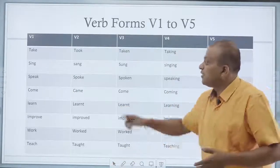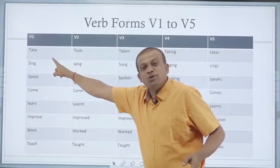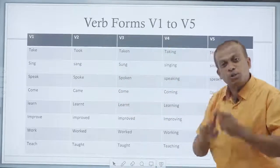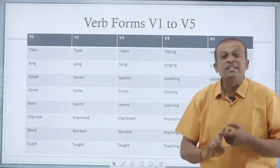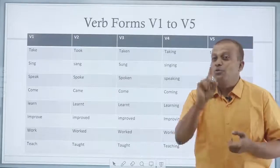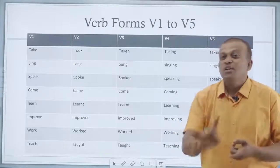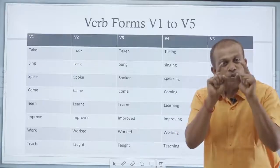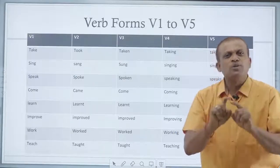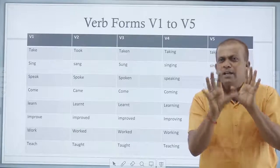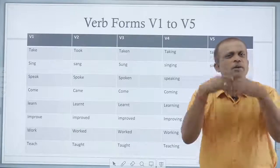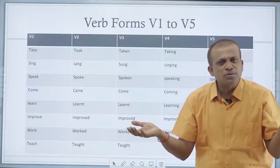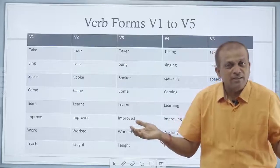Where I have to use the word 'take', where I have to use the word 'took', where I have to use the word 'taken', where I have to use the word 'taking', where I have to use the word 'takes'. If you understand how to use these 5 verbs in English, your English is undoubtedly beautiful and without any grammatical errors.